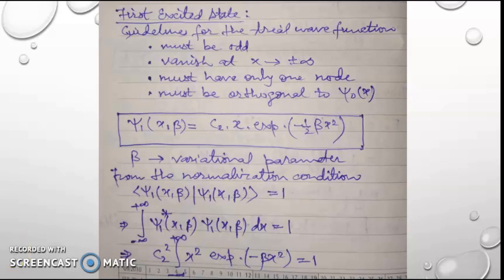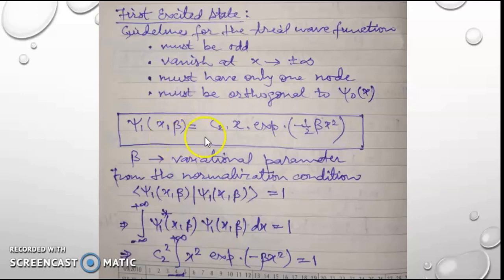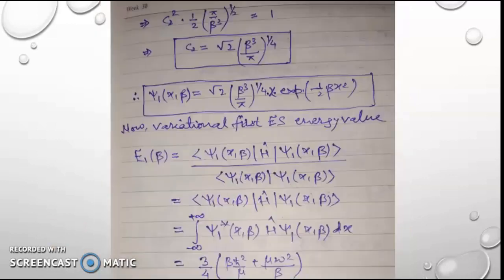Now we will go for the first excited state. Again we have to select a trial wave function. In the first excited state the trial wave function must be odd. It must vanish at x equal to plus infinity and minus infinity. It must have only one node and it must be orthogonal to psi naught of x. With all these guidelines in mind, we take the trial wave function psi 1 of x and beta, where beta is the variational parameter, as psi 1 of x beta equal to c2 x times exponential of minus one-half beta x squared. From the normalization condition we obtain the expression for c2, the amplitude of the wave function in the first excited state.